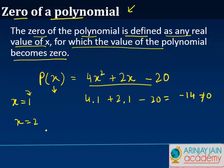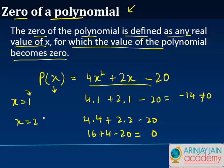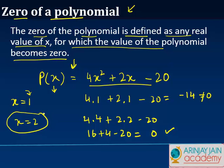But what about 2? If I put the value as 2, then I get 4 times 2 squared which is 4, plus 2 times 2 minus 20. So 4 times 4 gives us 16, plus 4 minus 20 is equal to 0. So when x is equal to 2, the value of this polynomial becomes 0. Any real value of x for which the polynomial becomes 0 is a zero of the polynomial, so 2 is a zero of this polynomial.